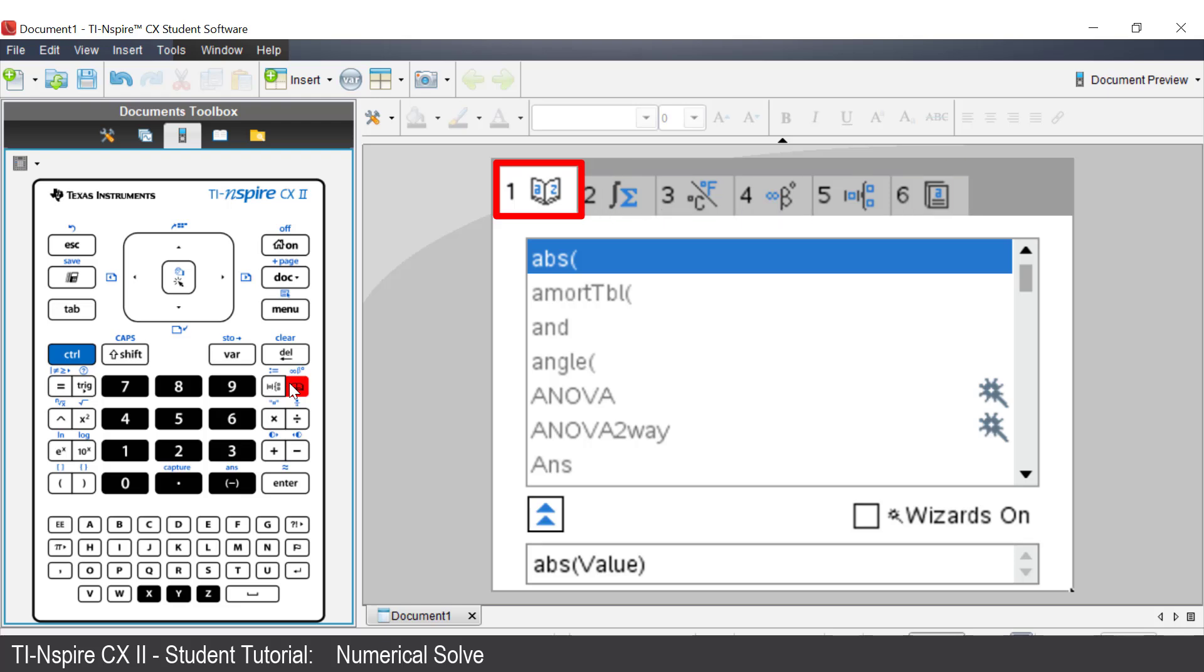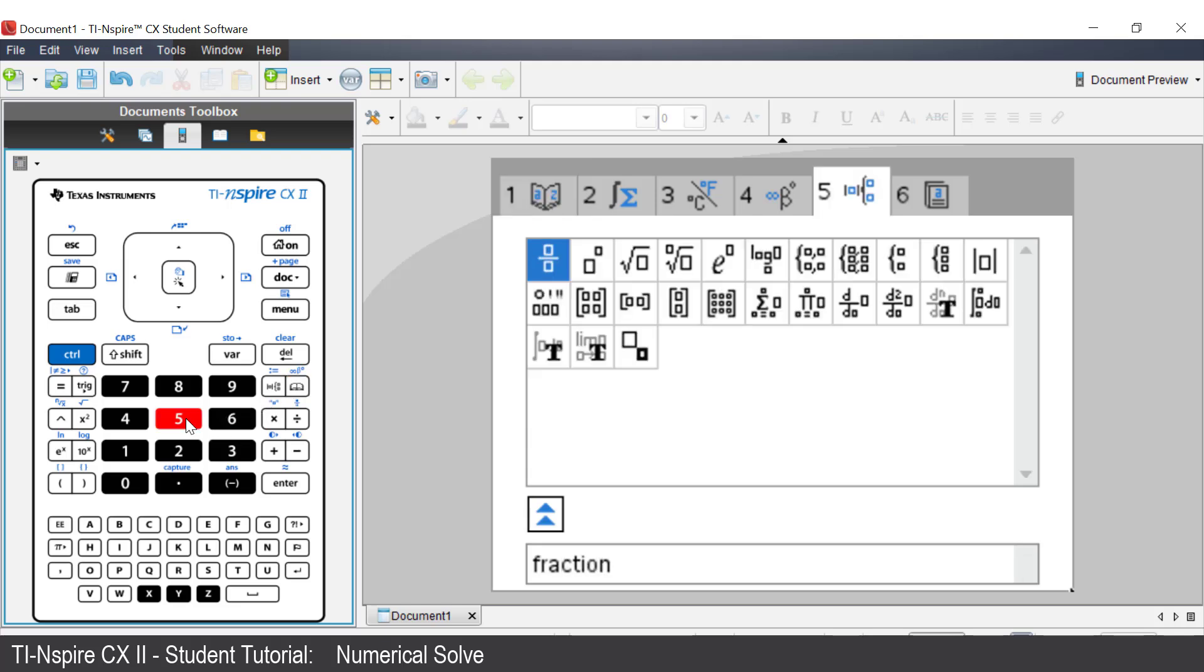Tab 1 lists all the stored commands in the calculator. If you are in, for example, tab 5, which is the templates, press 1 and you'll be back in tab 1.